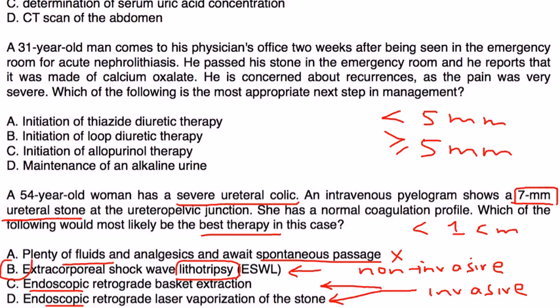And for larger stones, if you use lithotripsy and it's unsuccessful, then you can go to these retrograde invasive tests where you insert the endoscope and then you try to remove the stone.